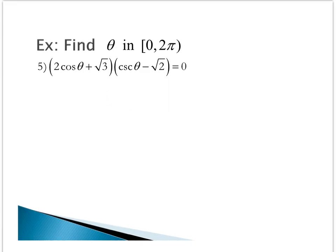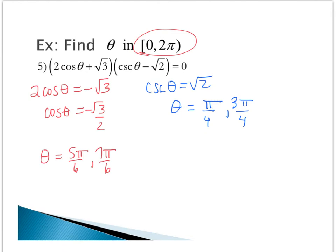Go ahead and try this problem on your own, and unpause the video once you have your solution to check your work. I'm going to set each of those factors equal to 0 and isolate the trig function. I get that cosine of theta equals negative root 3 over 2 at 5 pi 6 and 7 pi 6. Cosecant of theta equals root 2 at pi fourths and 3 pi fourths.